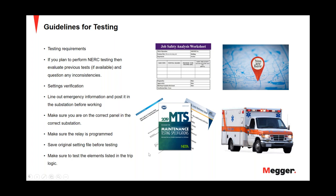Make sure the relay is programmed and that you have the original setting file before you test. When you go to the relay, you want to pull the original file out before doing any testing — save it as an 'as-found' file in its own proprietary format. So if we're doing the SEL 351, use the appropriate software — Accelerator — save the original file, and then start adjusting things. If something happens during the test, you have the original file to dump back into the relay and not leave it unprotected.